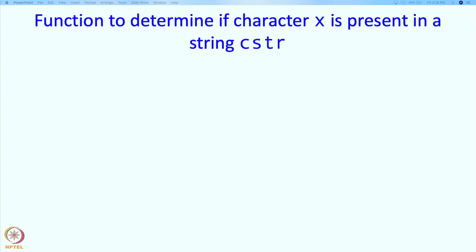Let us write a simple function for strings. This is a function which determines if a character x is present in a string CSTR. It takes as argument the character x itself and character array CSTR. We are going to call it constant because inside this function the array CSTR is not changed. The purpose of this function is to determine if x occurs inside CSTR, and it will return true if x occurs and return false if it does not occur.